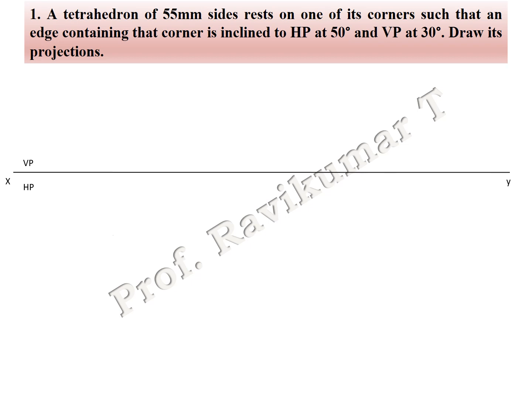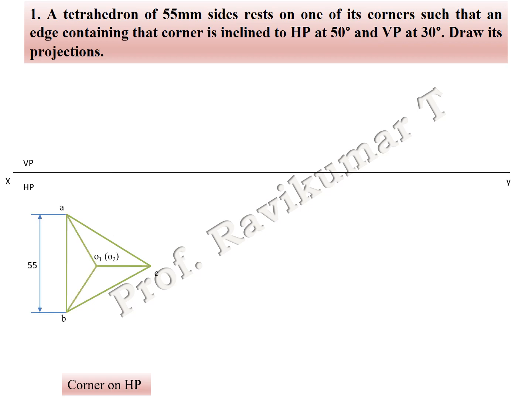If you are looking from the top of the object, the tetrahedron looks like an equilateral triangle. So that 55 mm equilateral triangle we have to construct first, with corner towards your right-hand side. Then all diagonal lines are visible, and naming is done.